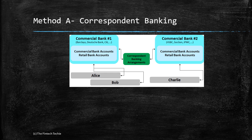Let's take an example of Alice trying to move funds from her account in Bank One to Charlie's account in Bank Two. In all three methods, a message is sent from Bank One to Bank Two, and on receipt of the message, Bank Two credits Charlie's account. But why would Bank Two take a risk and credit Charlie's account just on the basis of a message? That's where settlement comes in.